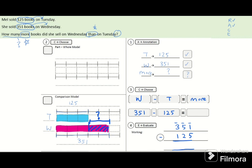Starting from the ones, regroup 5 tens and 1 one to 4 tens and 11 ones, so that you can take away 5 ones to leave 6 ones. 4 tens minus 2 tens gives 2 tens. And 3 hundreds minus 1 hundred leaves 2 hundreds. So the answer will be 226.